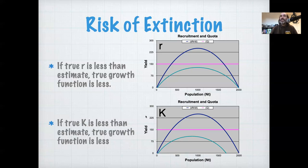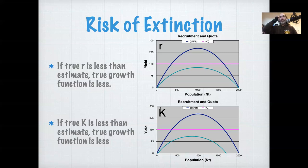Given that there's uncertainty in both R and K, if we assume those uncertainties are independent and you set the quota at the maximum sustainable yield, there's a 50% chance R is lower than you think and a 50% chance K is lower than you think. So there's now a 75% chance you're driving the species to extinction if R and K are independent. Obviously that changes if R and K are correlated, and they probably will be, but it might not necessarily work in your favor. The point is, when you set these quotas, we have to take the uncertainty in these parameters into consideration.